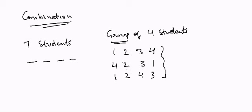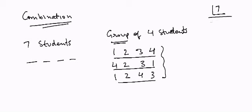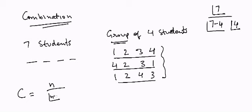The number of possibilities decreases by the number of possible arrangements those four seats can have. So we take the permutation — 7! divided by (7 − 4)! — and then divide by 4 factorial as well. We divide by 4! because we can arrange the four seats in 4! ways, and in a group it does not matter how they are arranged. So the combination formula is N! divided by (N − R)! times R!.